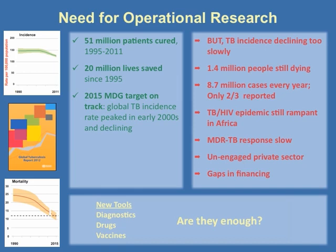But there are several challenges. TB incidence, while it is declining, is declining too slowly — less than 2% a year. It is really a shame that 1.4 million people still die of TB every year, which is a completely treatable disease. Nearly 8.7 million new cases occur every year with only two-thirds being notified to national programs. Despite considerable progress, the TB-HIV epidemic is still rampant in Africa. And the response to MDR-TB is even worse — of about 600,000 plus MDR-TB cases prevalent, less than 10% are diagnosed and treated in national programs. There is a vast unengaged private sector with major gaps in financing for TB control.